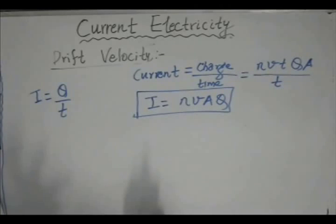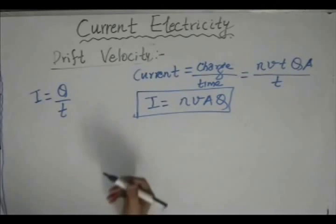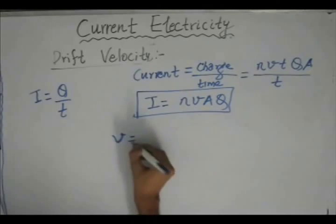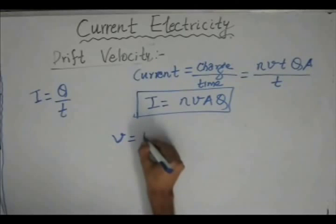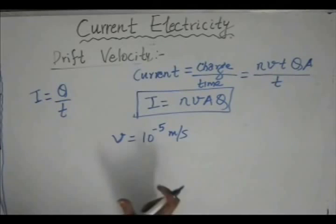Now a very interesting phenomenon can be observed in our normal household electrical appliances. Suppose we consider a bulb — as soon as we switch it on, we can see that almost instantaneously the bulb glows. But if we look at the drift velocity of an electron in a copper wire, we find that the drift velocity of the electron in a conductor is about 10 to the power minus 5 meter per second. This velocity is very small.